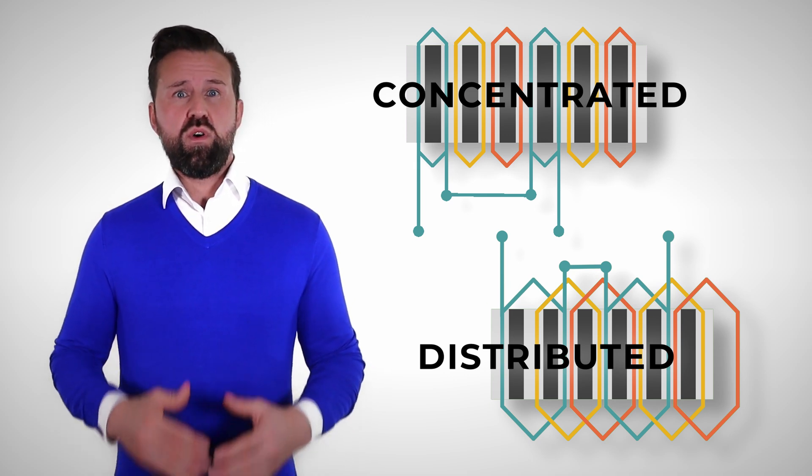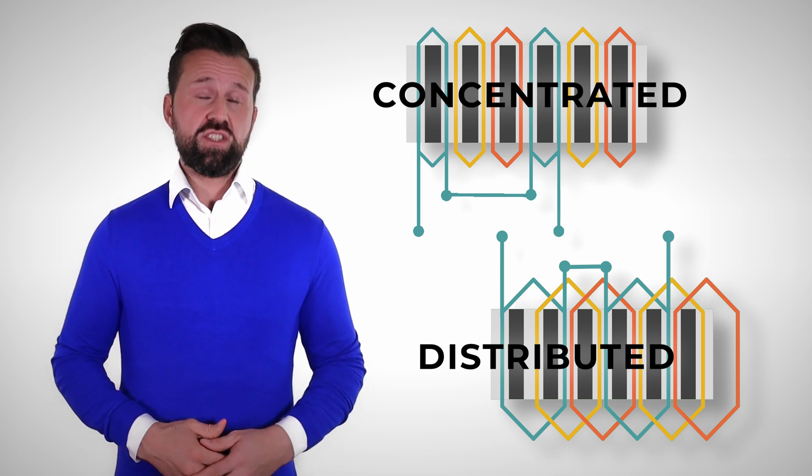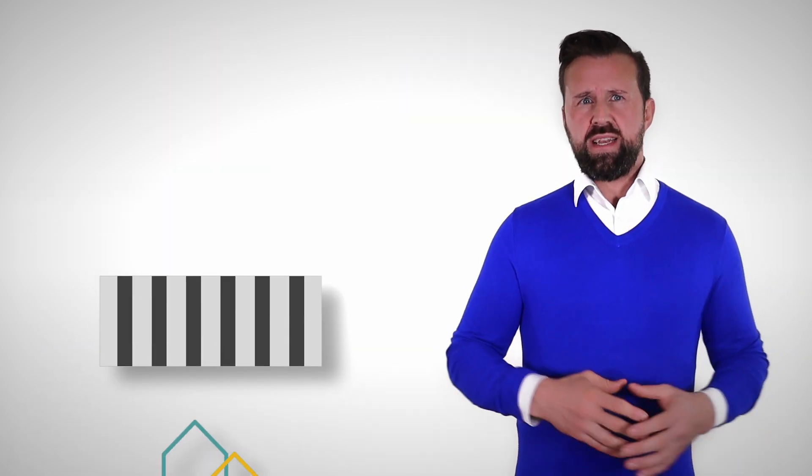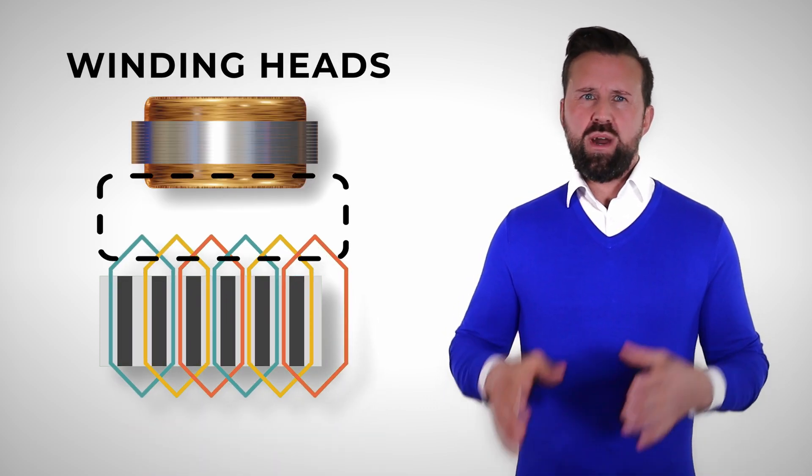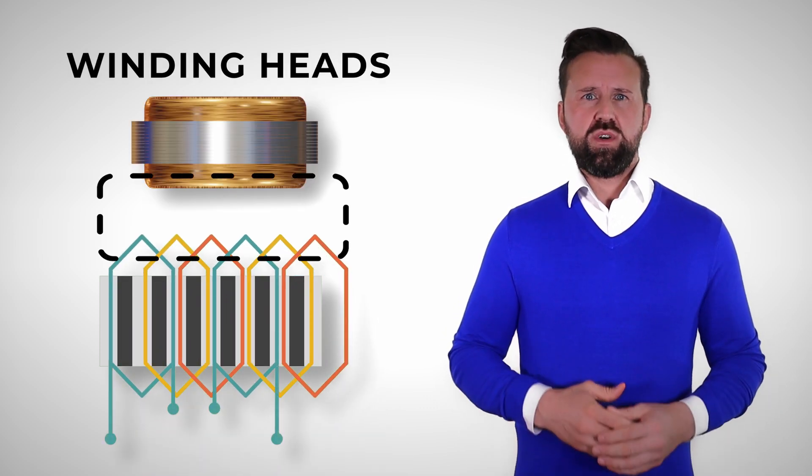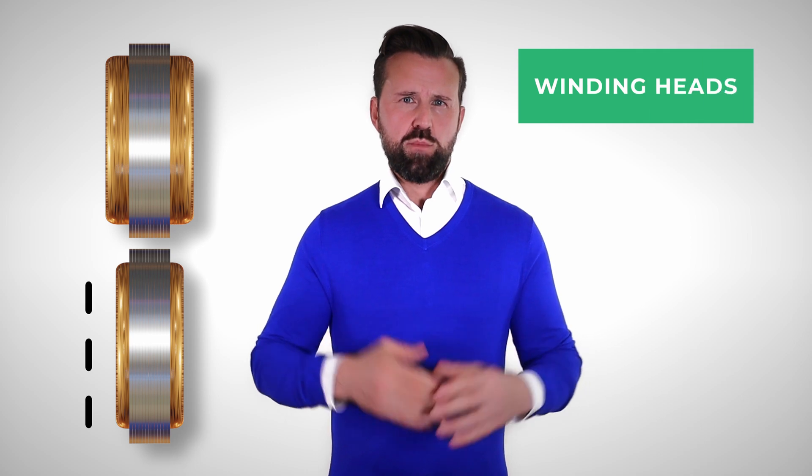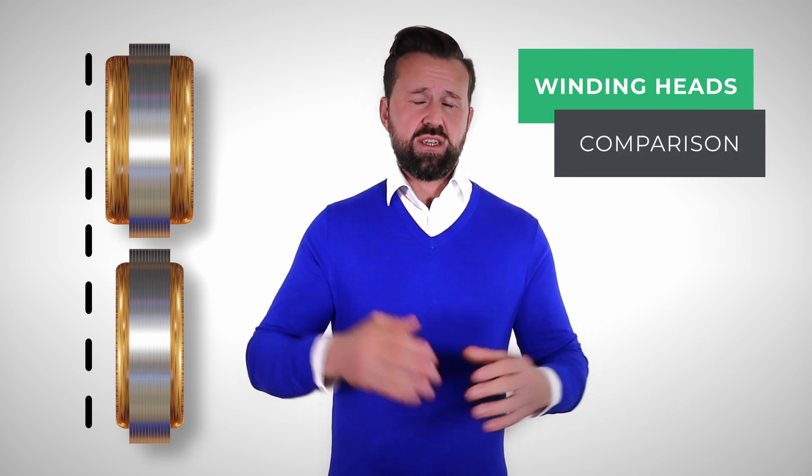You can find a link with more examples of winding configuration in the description. You can see with a distributed winding, the windings overlap at the upper and lower end. This area of the motor is also called winding head. Because of the overlapping, the winding head is larger at distributed winding than with a concentrated winding.